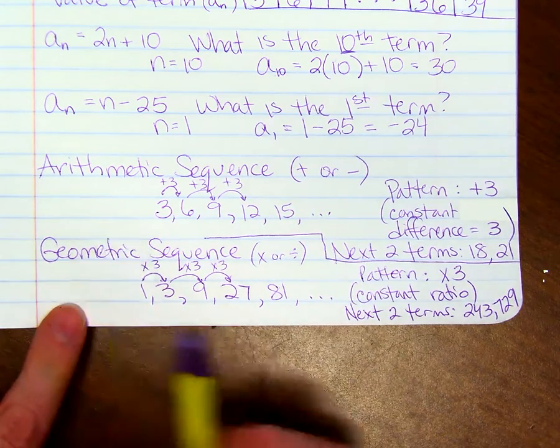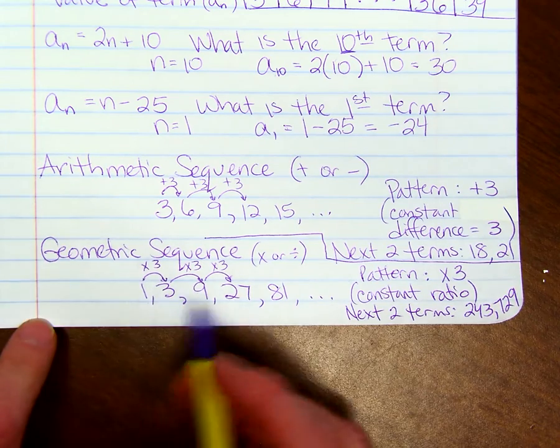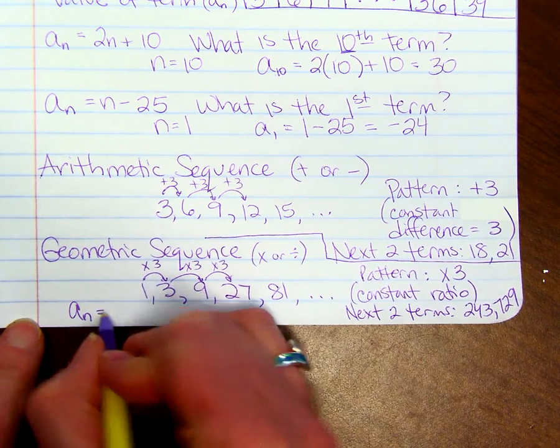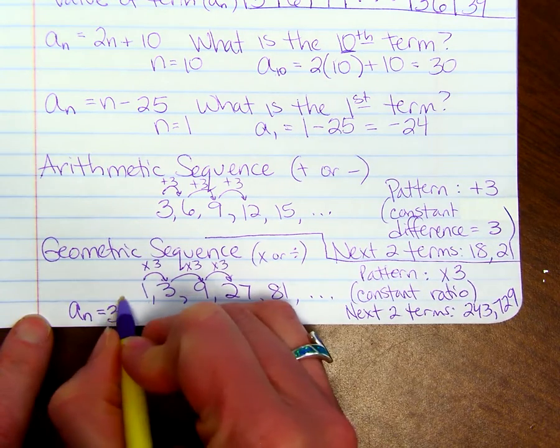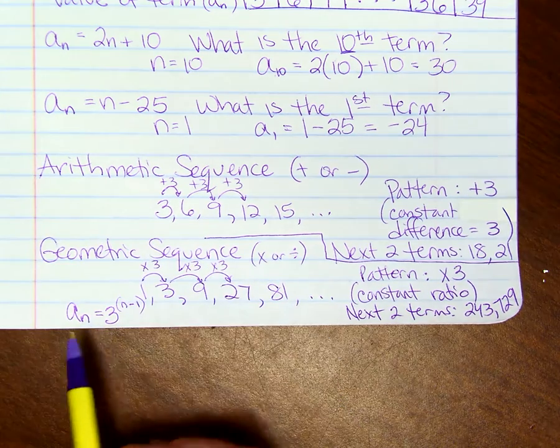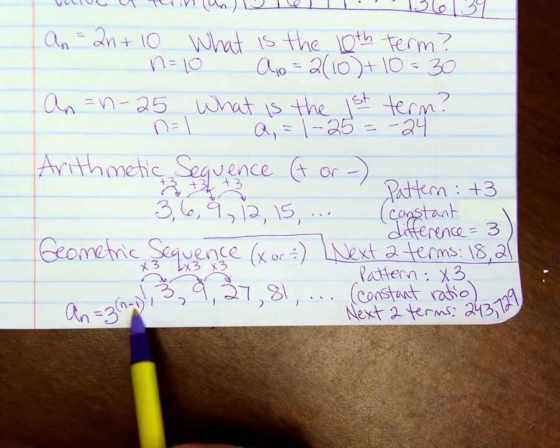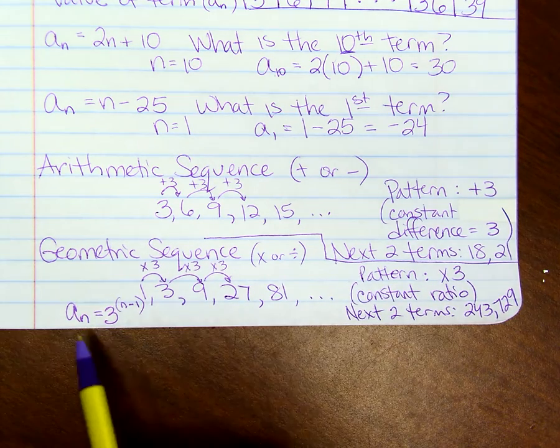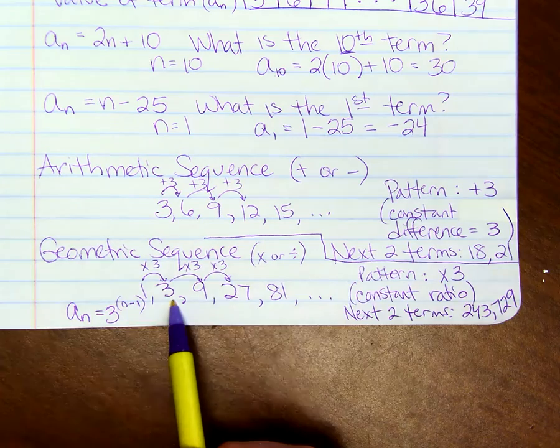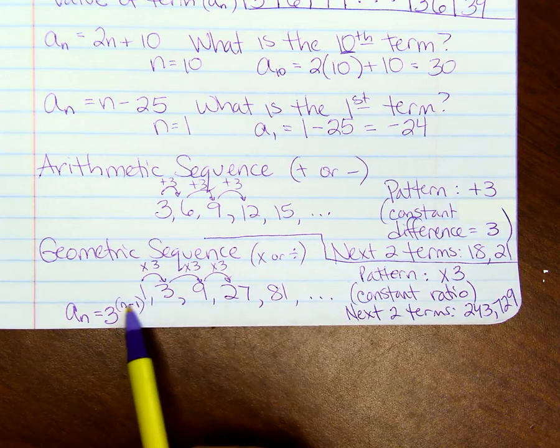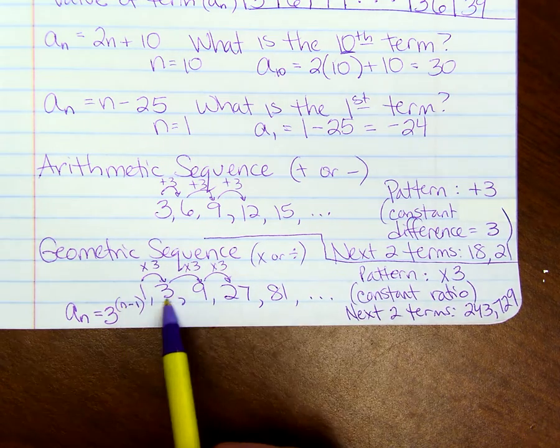The formula for this geometric sequence is a sub n equals 3 to the n minus 1. If n is 1, the first term is 3 to the 0th, which is 1. If n is 2, the second term is 3 to the 2 minus 1 or 3 to the first power, which is 3.